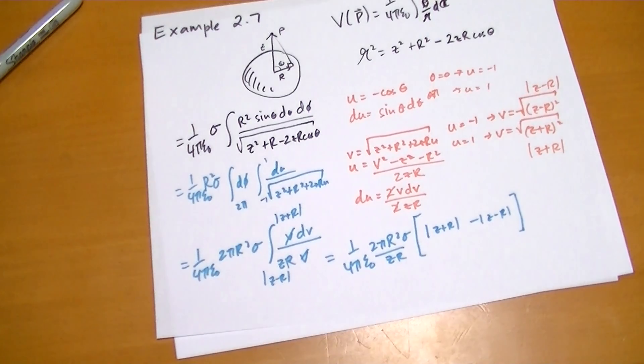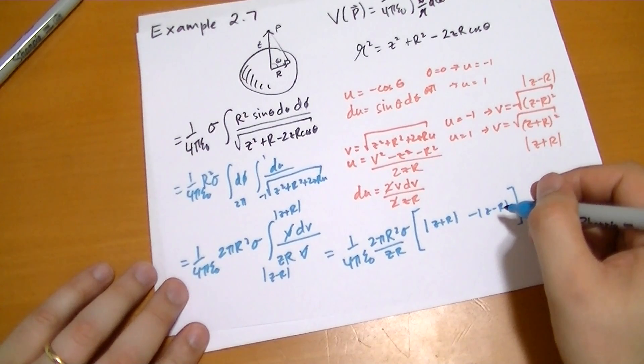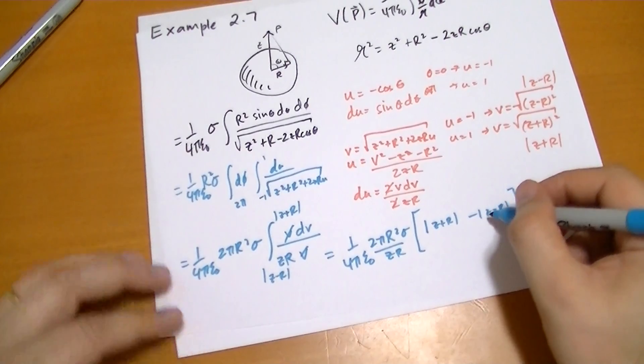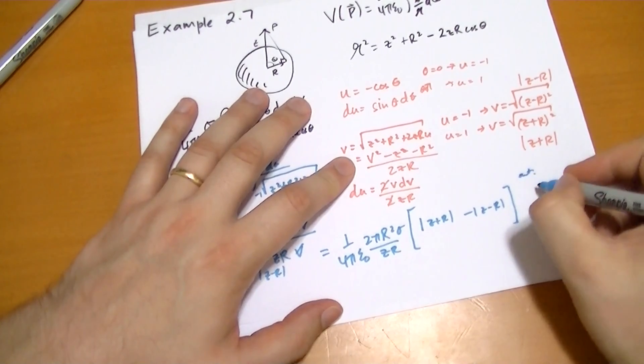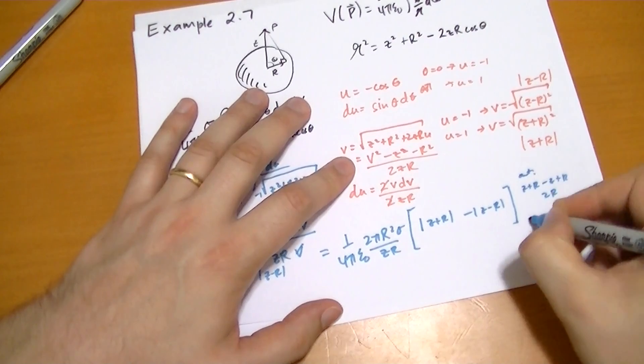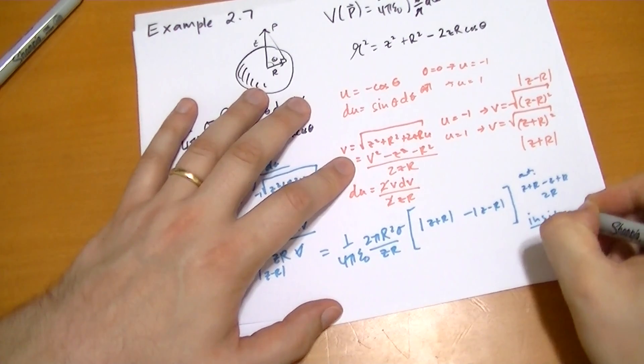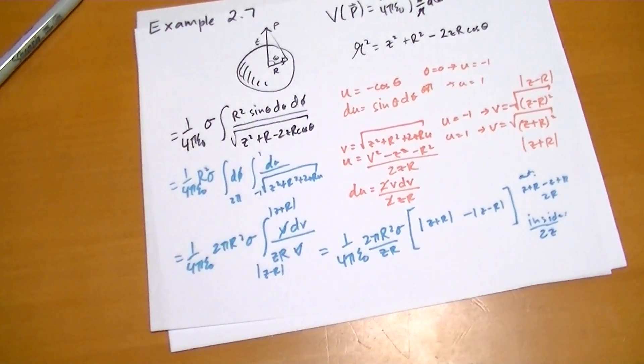So when we have two conditions, when we're outside, that means z is greater than r. This term is positive. So outside, we get z plus r minus z plus r. So we get 2r. Inside, we get, this has to be flip sign, so it's going to be 2z. Okay? So we basically get, we have the factor of 2 that's constant.